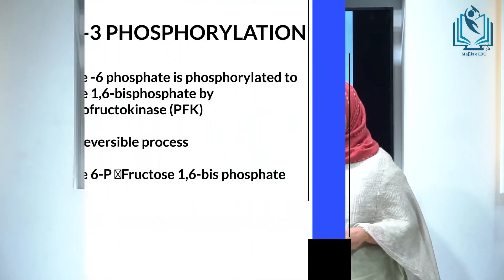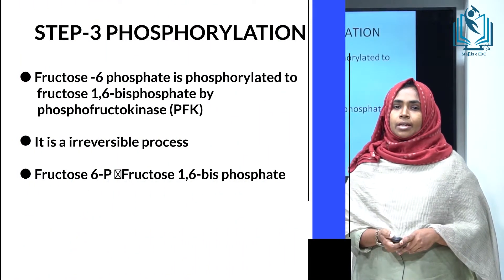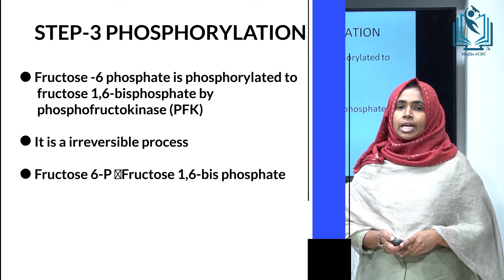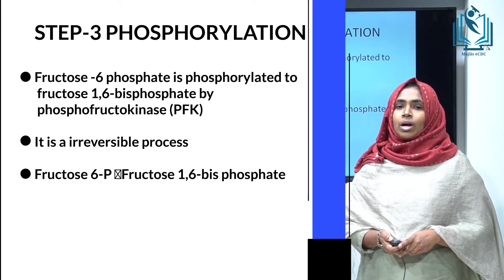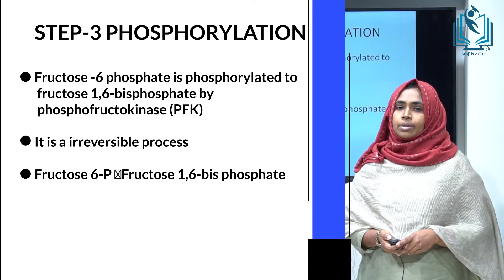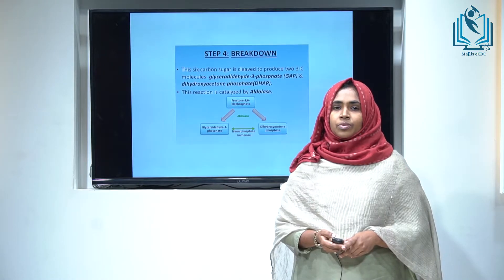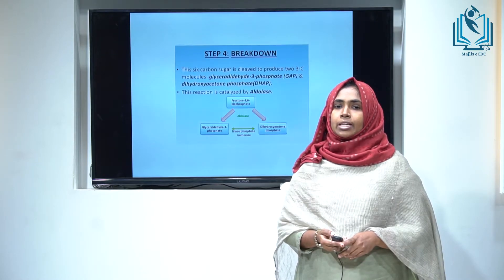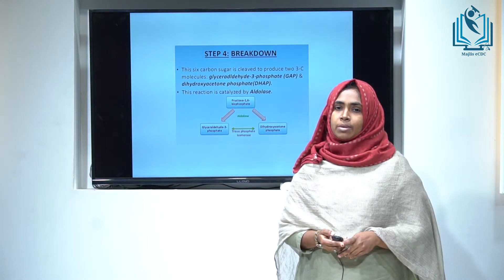The third step of glycolysis is again phosphorylation. Here, fructose-6-phosphate is converted into fructose-1,6-bisphosphate by the enzyme phosphofructokinase. One molecule of ATP is required, and this process is irreversible. These first three steps are part of the energy investment phase or priming stage.